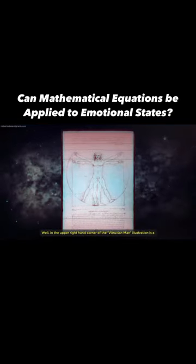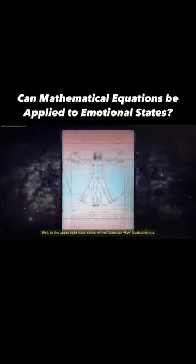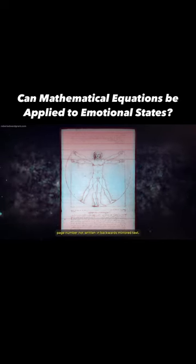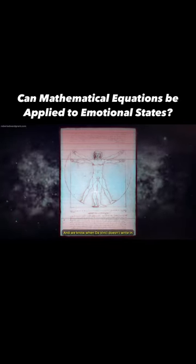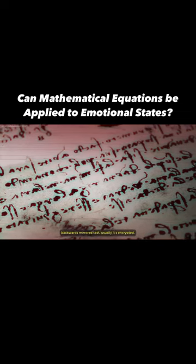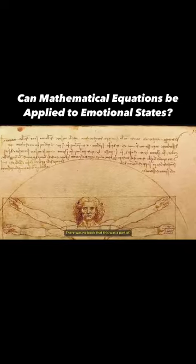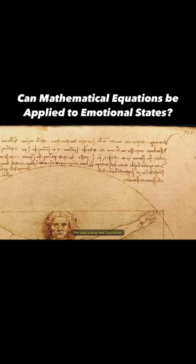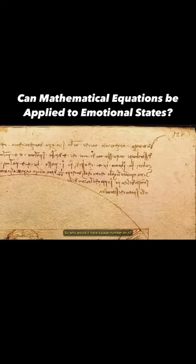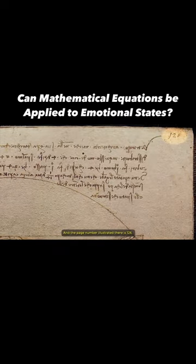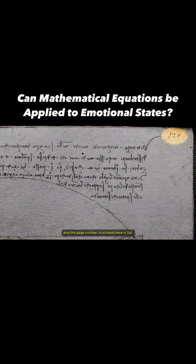In the upper right-hand corner of the Vitruvian Man illustration is a page number, not written in backwards mirrored text. When da Vinci doesn't write in backwards mirrored text, it's usually encrypted. There was no book that this was part of—this was a loose-leaf illustration. So why would it have a page number on it? The page number illustrated there is 126.